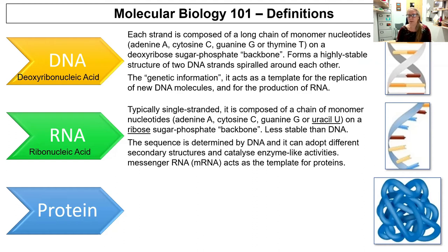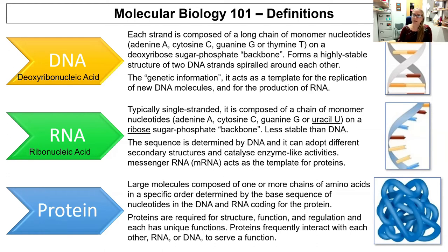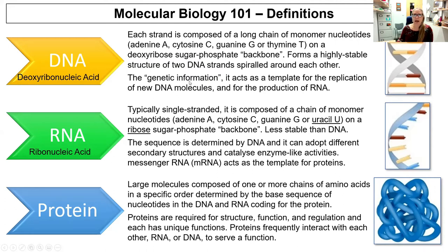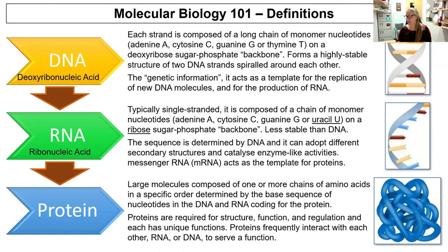The sequence of RNA is determined by the sequence of DNA, and RNA can adopt different secondary structures, each of which can act like enzymes and catalyze activities. Messenger RNA — mRNA — is the most important RNA to remember today because it is the template for proteins. Proteins are large molecules composed of one or more chains of amino acids in a specific order determined by the base sequence of nucleotides in the RNA, and therefore from the DNA. Proteins are required for structure, function, and regulation. The key takeaway: DNA makes RNA makes protein.